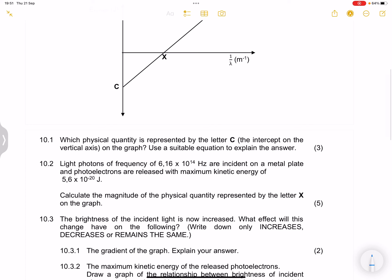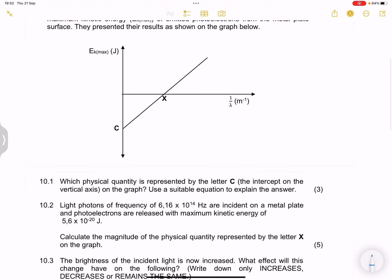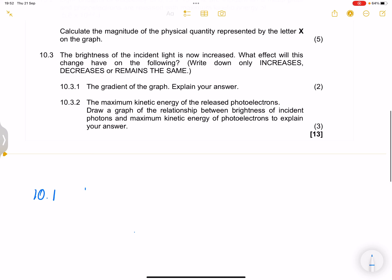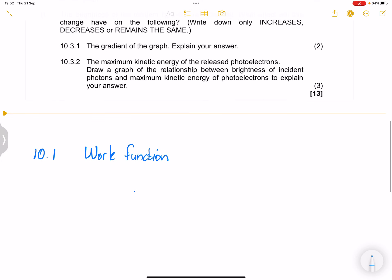Now they say to us which physical quantity is represented by the letter C, the intercept on the vertical axis on the graph. I want you to note in this case, of course, you've seen me do these graphs previously. If you haven't watched my videos on the photoelectric effect, I would advise that you do so. So in this case, we know that this would represent definitely the work function. Now how would we prove that?